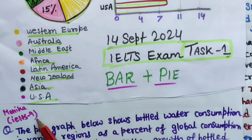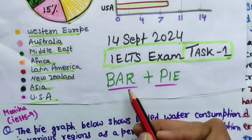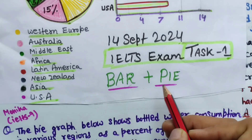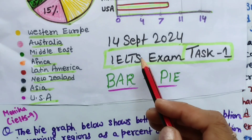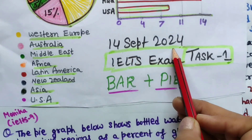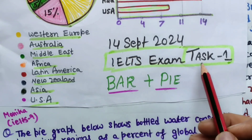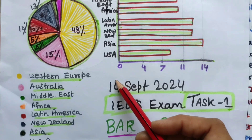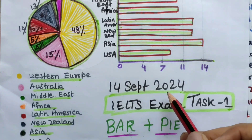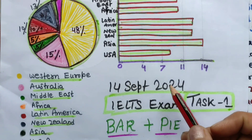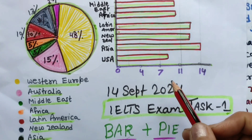Hi everyone, I am Monica from IELTS 9. We will be doing this bar plus pie chart combination of tasks. That was part of the 14 September 2024 IELTS exam task 1. There is one more task 1 as well — there were two sets, like morning and evening slots.